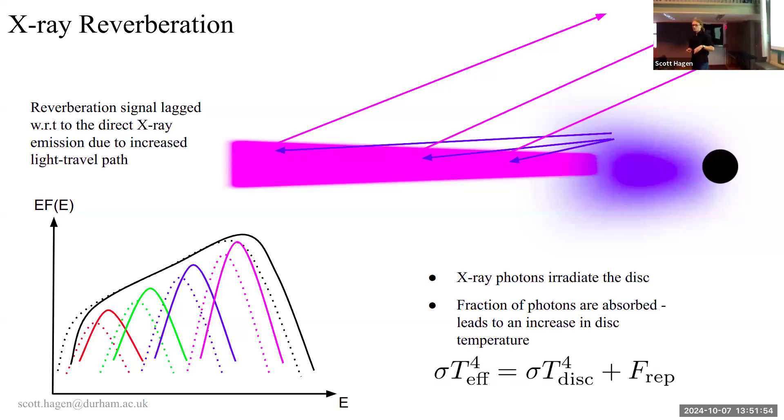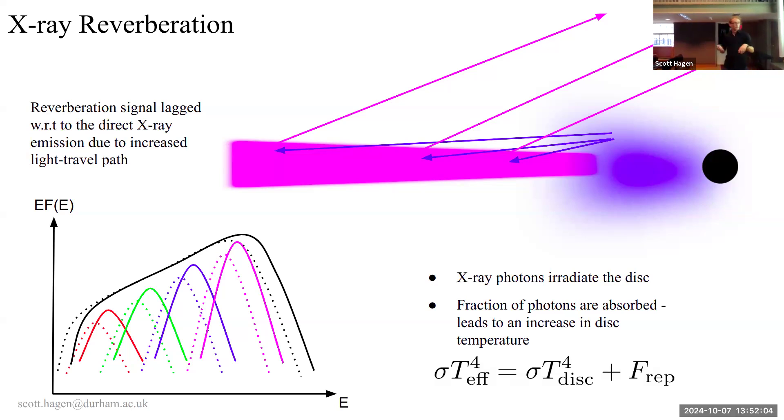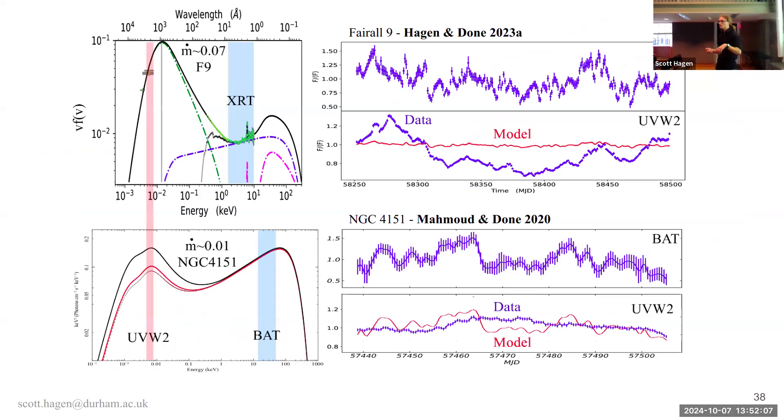And so your highly variable X-rays illuminate the disc, some of them get absorbed, some of them get reprocessed, some of them heat the disc, and that modulates your UV optical emission. And so the idea there is that your UV optical light curves are entirely driven by this X-ray reprocessing, but with some time lag from the light travel time. This is relatively easy to test. So we can build a reverberation model that will take an X-ray light curve, and use it to predict exactly what the UV optical light curves will look like. And generally when you do that, it doesn't work.